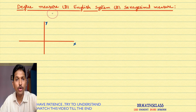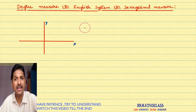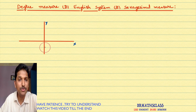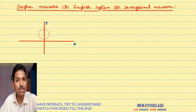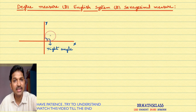Before going to know what is degree, we must know what is a right angle. What is a right angle? If two lines are perpendicular, then we say that the angle between them is a right angle. You observe here — I consider two perpendicular lines. The angle between them is a right angle — one right angle.